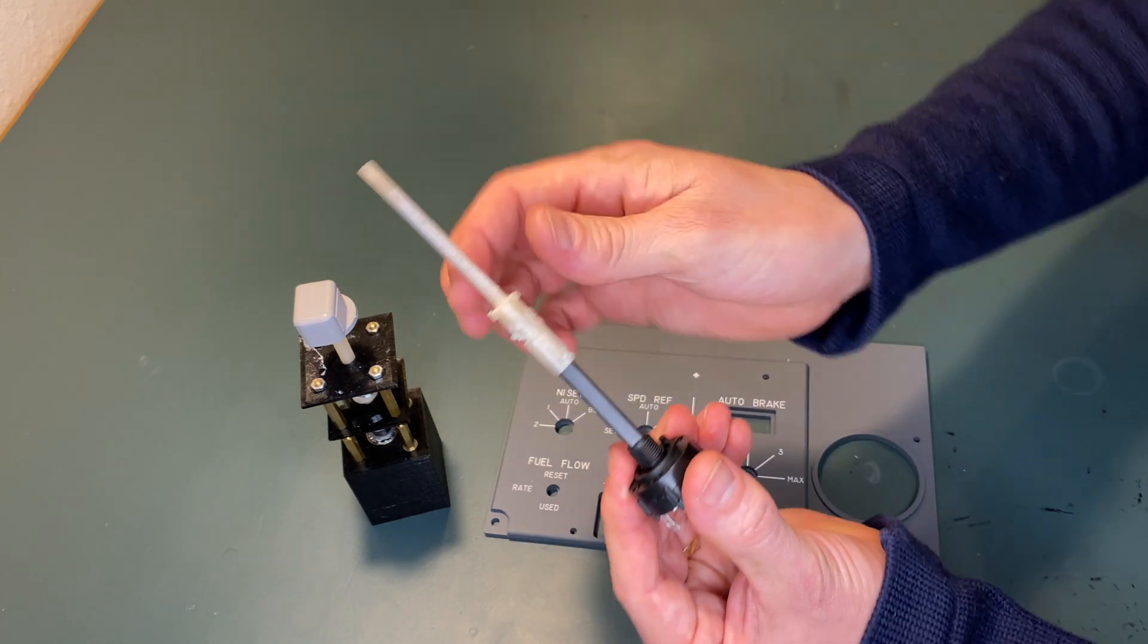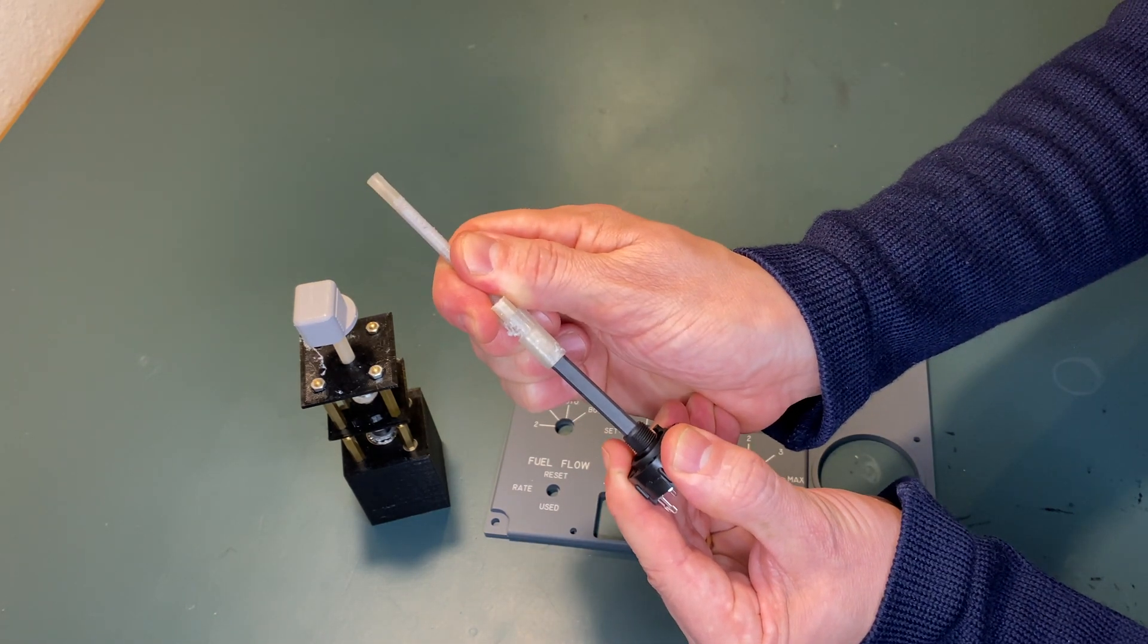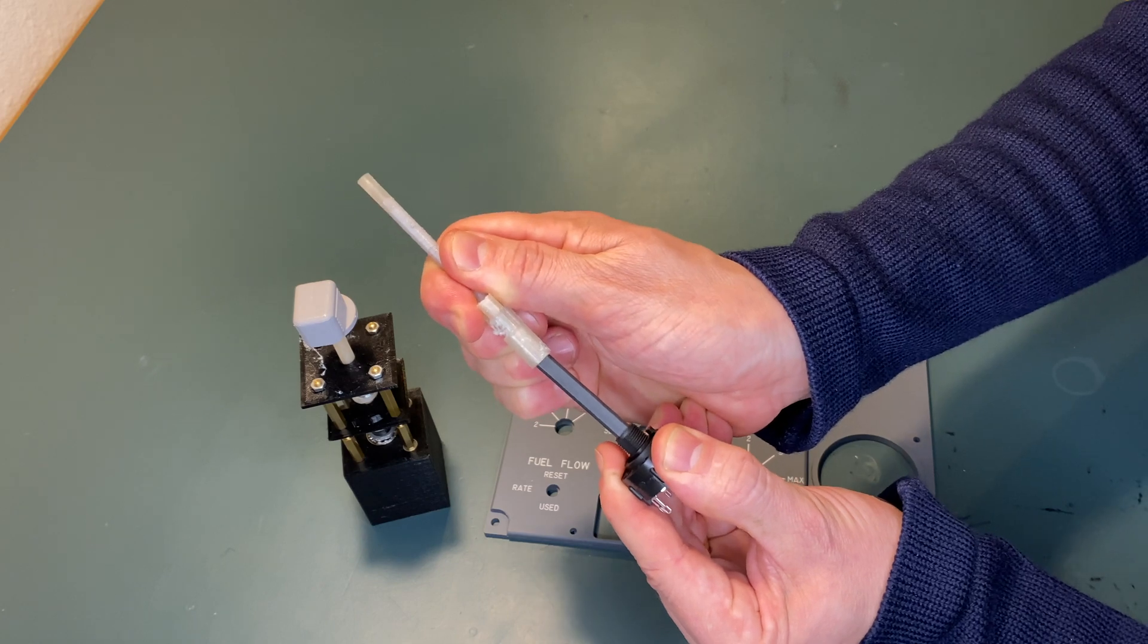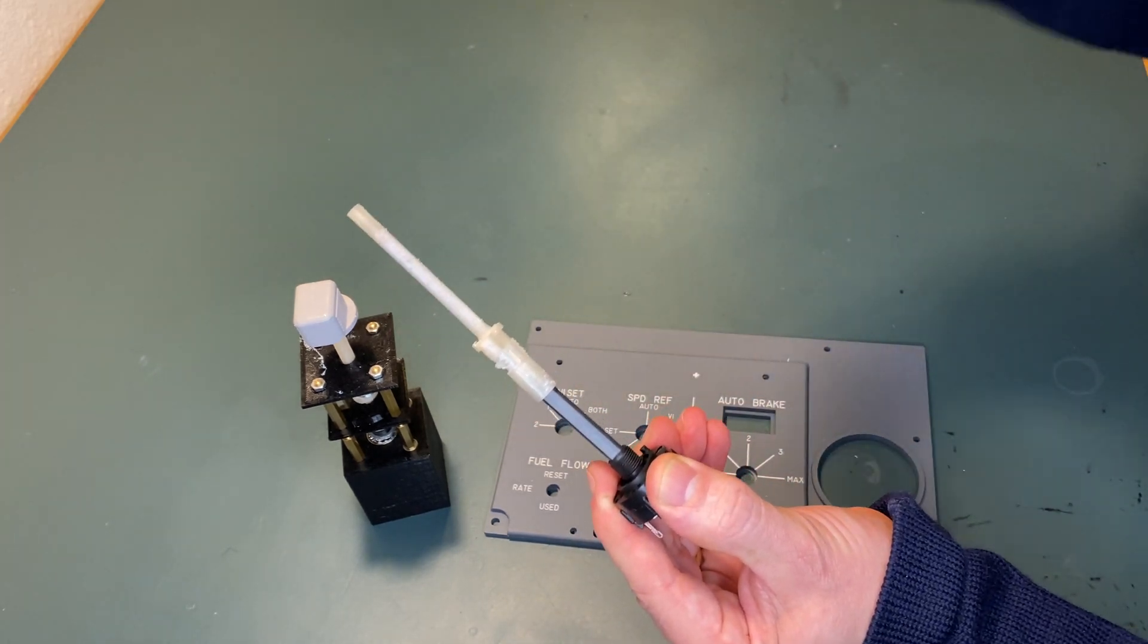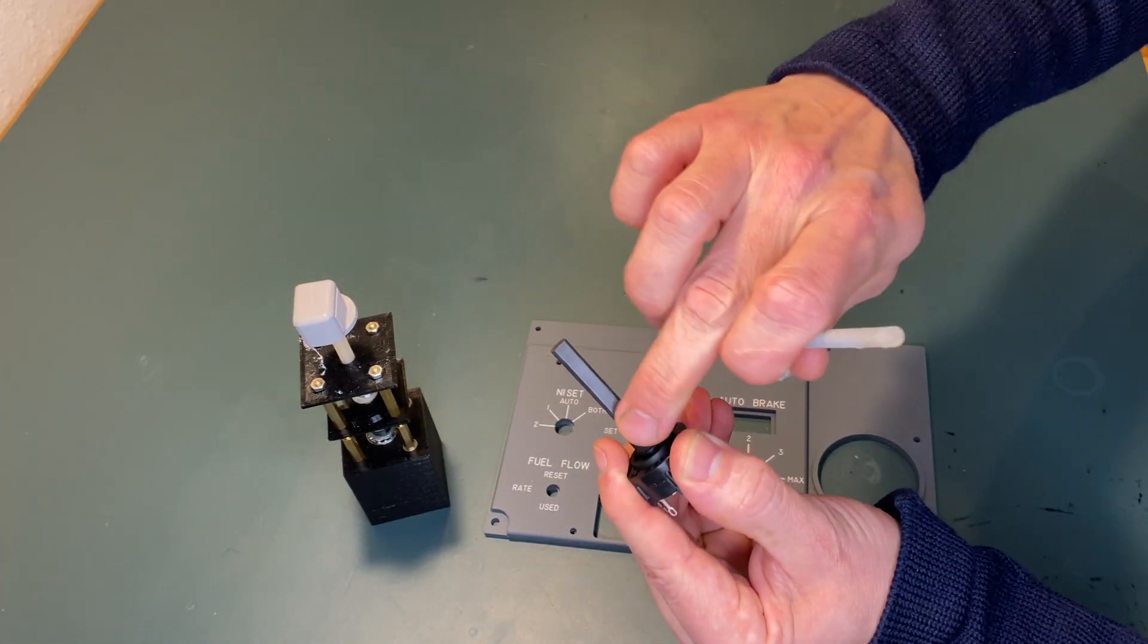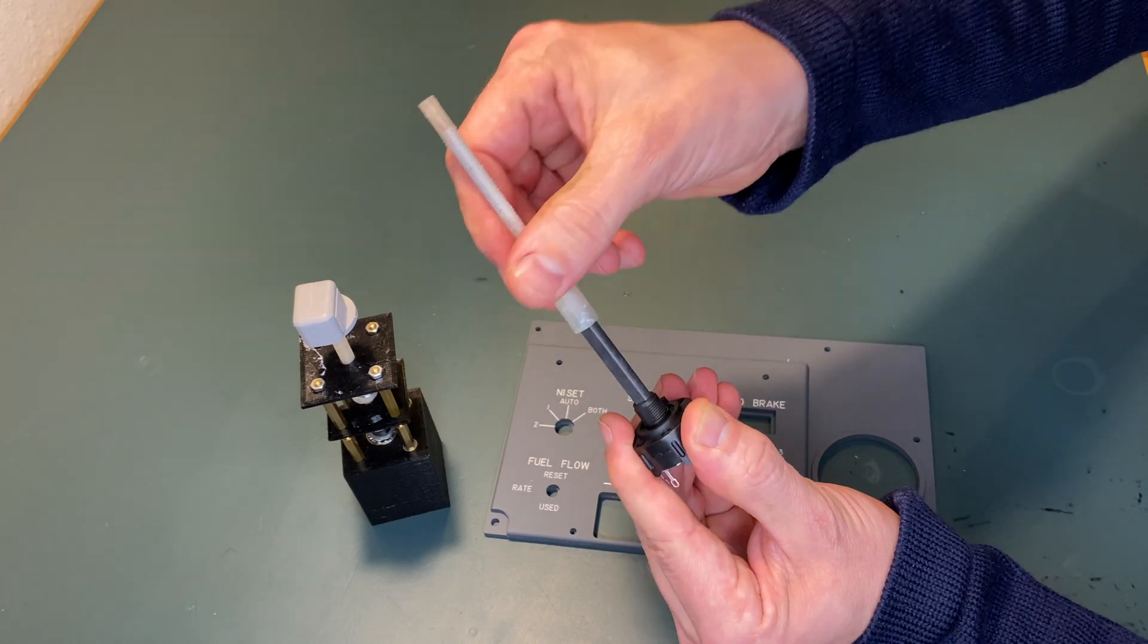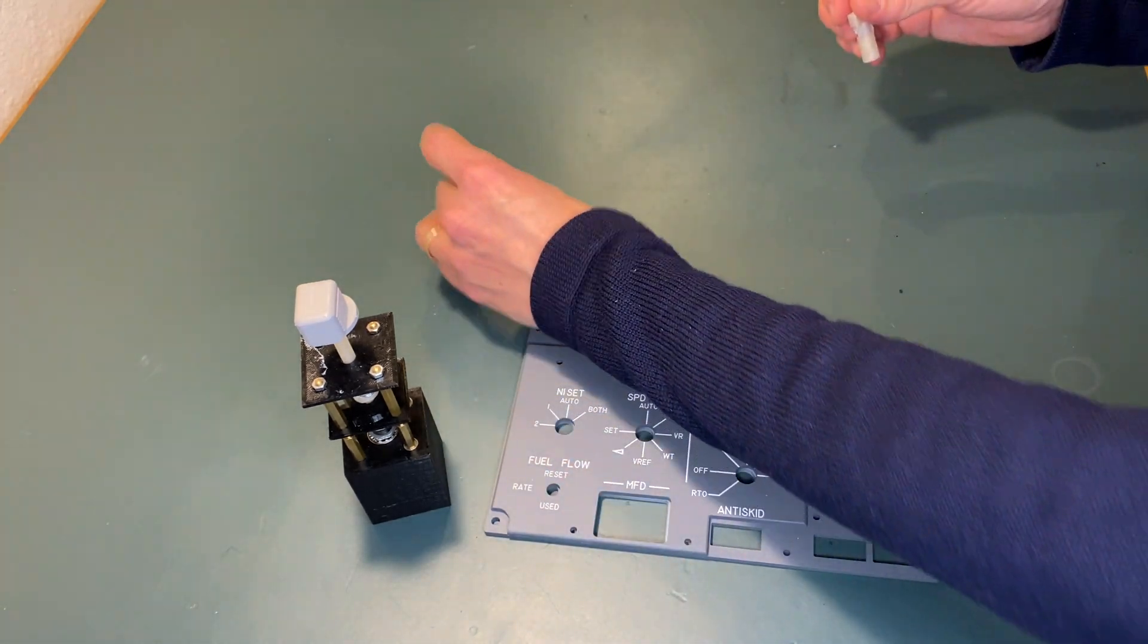You're not able to fasten it in any way because it needs to be able to move up and down freely, and that's why you can't glue it in place. You need that D-shaped shaft.